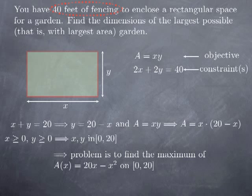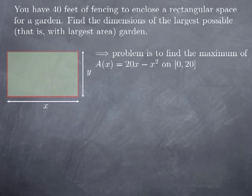Now I have reformulated the problem as: find the absolute maximum of the function A(x) = 20x minus x squared on the closed interval [0, 20]. A is a polynomial, so this is a continuous function on a closed interval. I know how to find the maximum — I can use the closed interval method. The absolute maximum occurs either at the endpoints or at a critical number that falls in the interval.